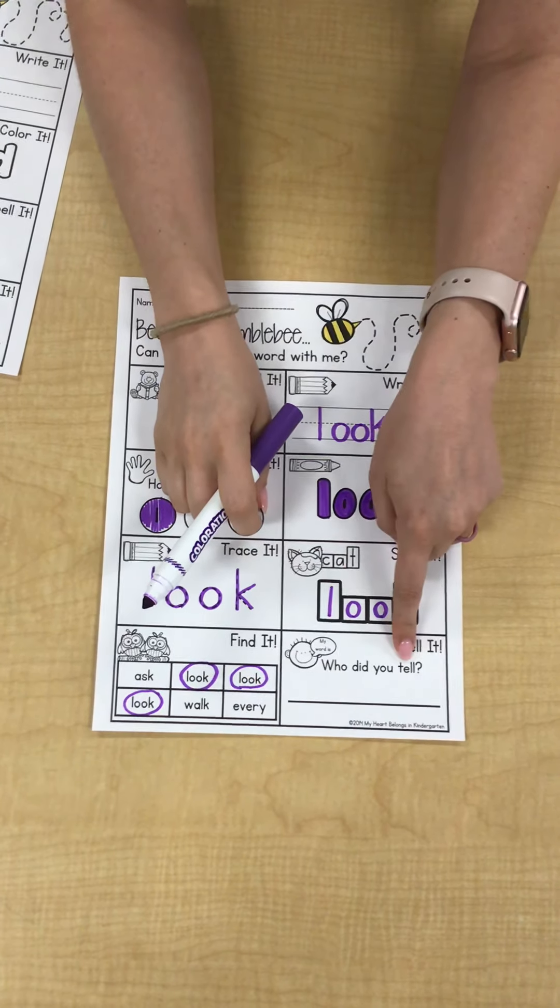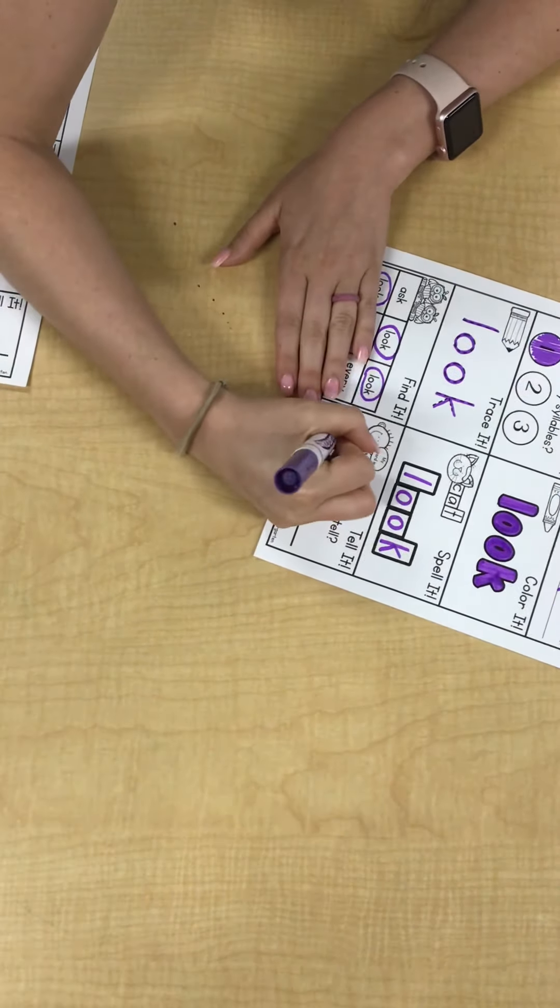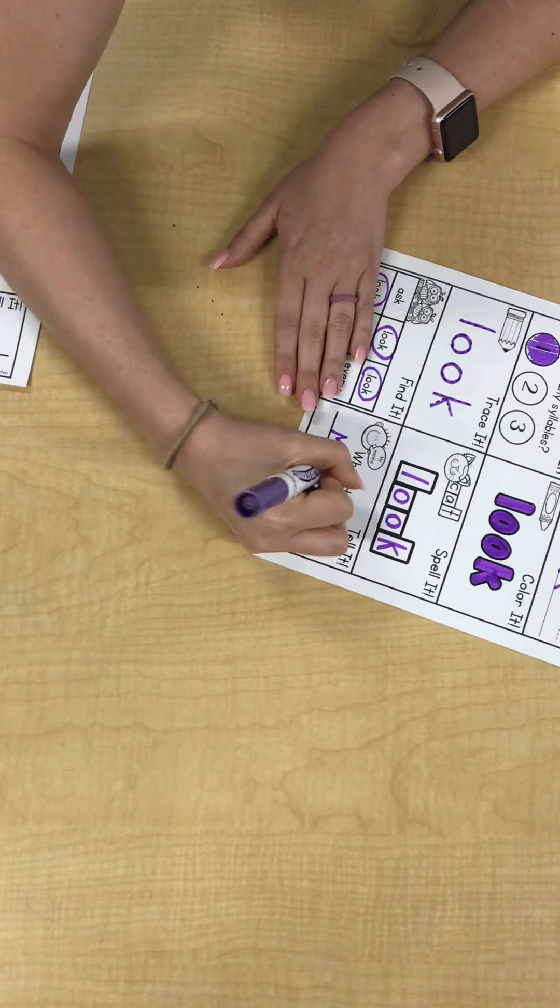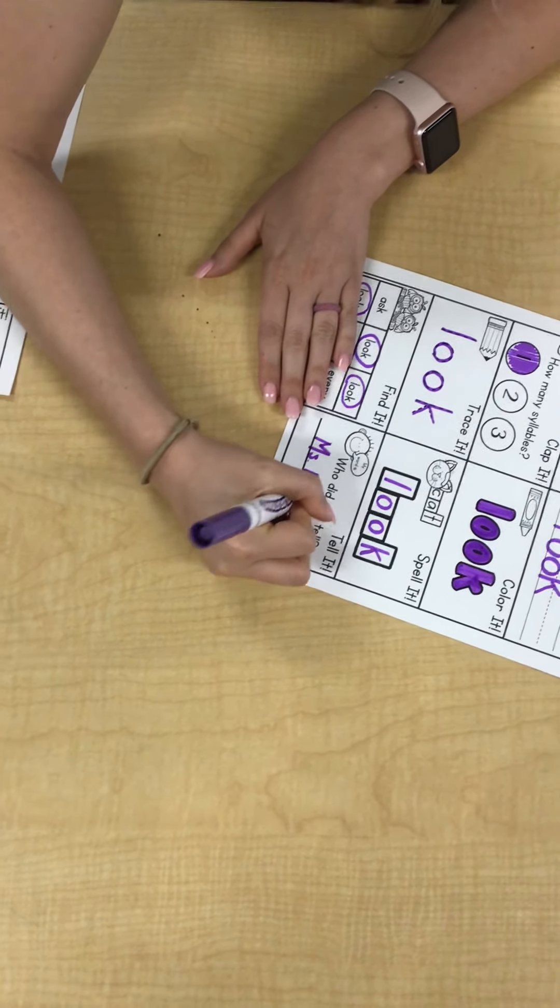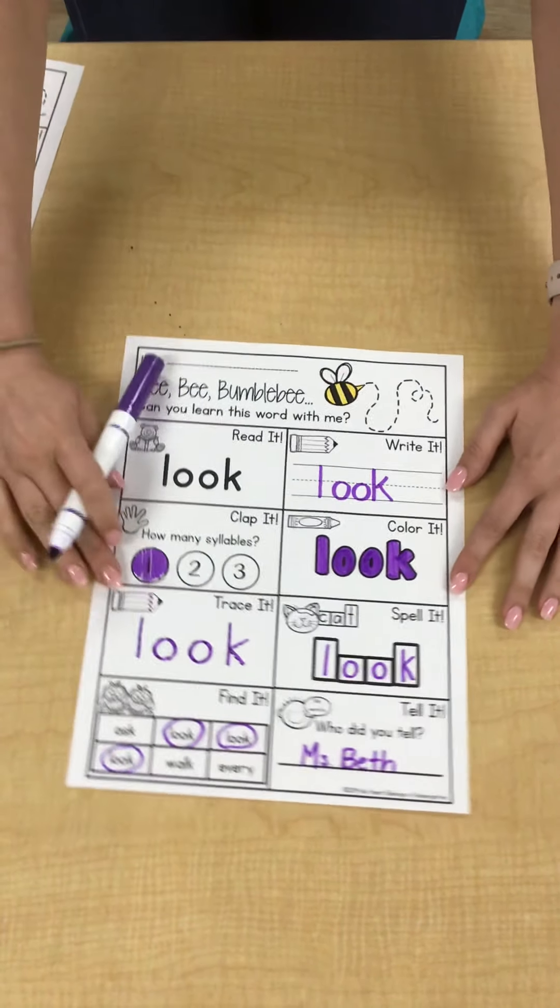The next says spell it. We'll use these boxes to help us spell look. Once again, we're going to write L, O, O, and K. See if I can do this upside down.